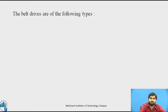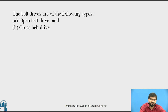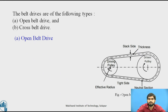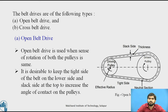The belt drives are of the following types: first, the open belt drive; second, the cross belt drive. In the open belt drive, if you observe this figure, the upper side is the slack side and the lower side is the tight side, and there are two shafts on which the driving and the driven pulleys are mounted. As it is an open belt drive, the pulleys rotate in the same sense — if the driving pulley rotates clockwise, the driven pulley also rotates clockwise. It is desirable to keep the tight side of the belt on the lower side and the slack side at the top to increase the angle of contact of the pulley — the angle of contact means how much portion of the belt is going to contact with the pulley.